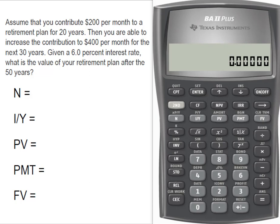We're going to break this into two annuities. The first annuity is going to be $200 for the entire 50 years, and then we increased our contribution to $400 a month — so that's an additional $200 — and that's going to last for 30 years. So we're going to take the $200 out over 50 years and the additional $200 out over 30 years.